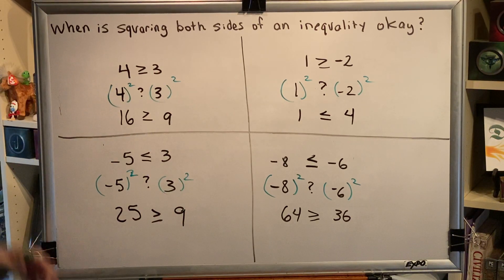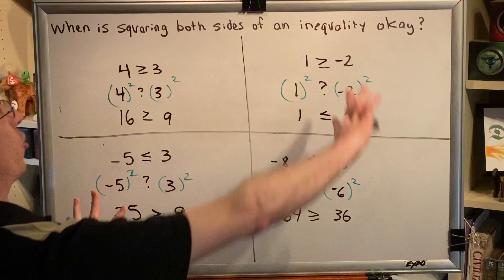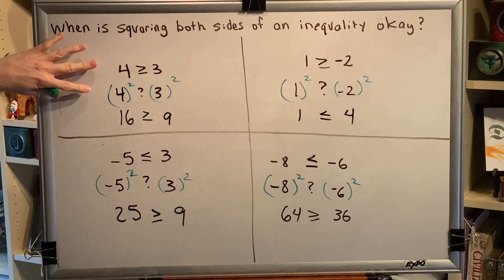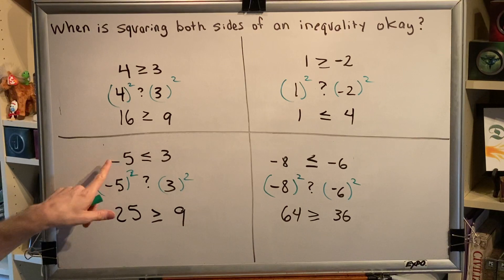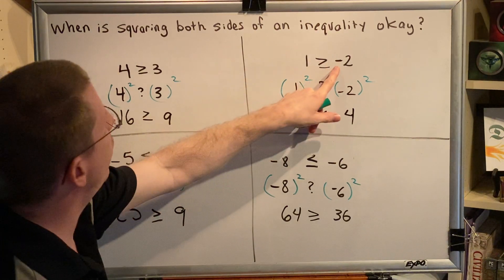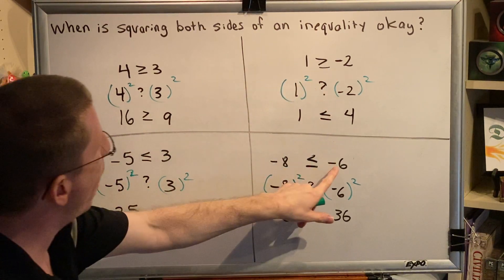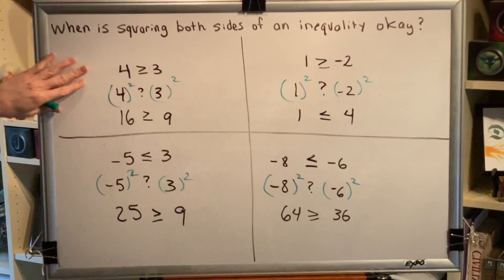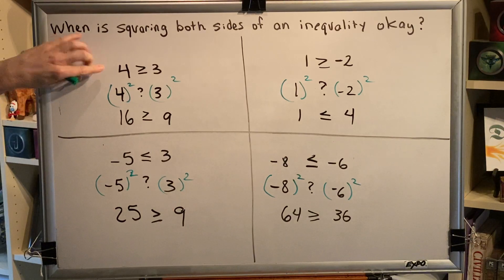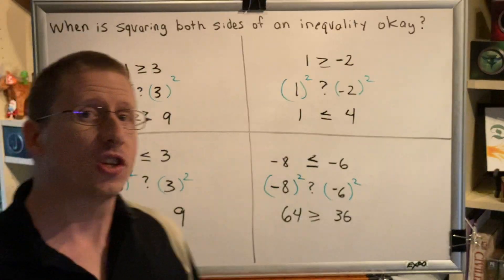So what characteristic does this inequality statement have that the other three inequalities don't? Or perhaps phrased another way, what do these three inequalities have that this one is missing? And to me the answer is a negative. Notice that these three inequalities all have a negative either on the right side, on the left side, or on both sides, but this one consists exclusively of two positive values. So this leads us to suspect...